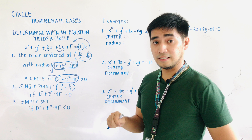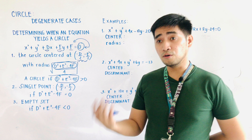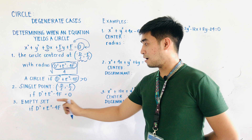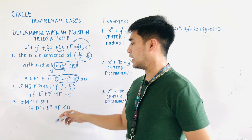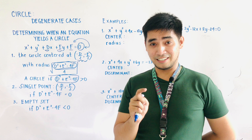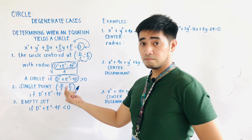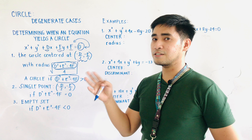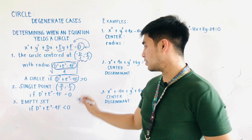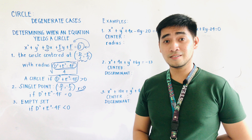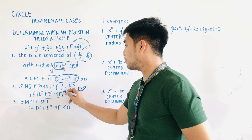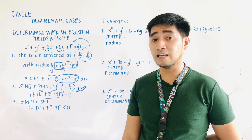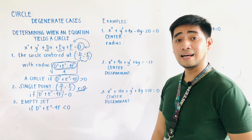For the degenerate case of a single point: if the radius equals zero, or equivalently if D squared plus E squared minus 4F equals zero, then it is a degenerate case and the equation becomes a single point. That single point is assumed to be the center, computed using the same formula negative D over 2 and negative E over 2.